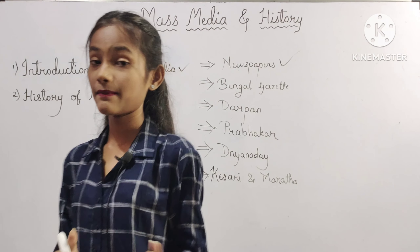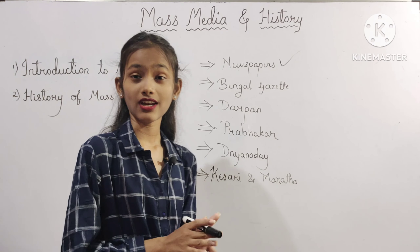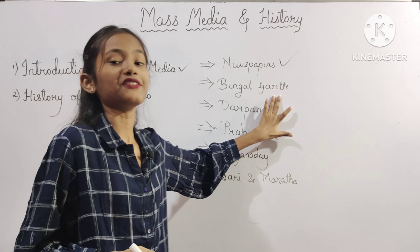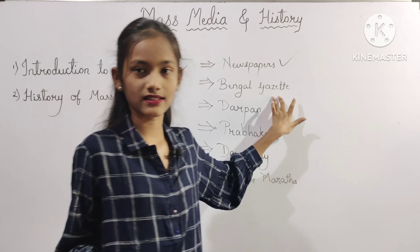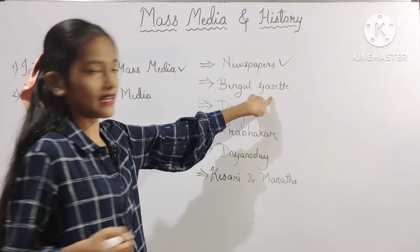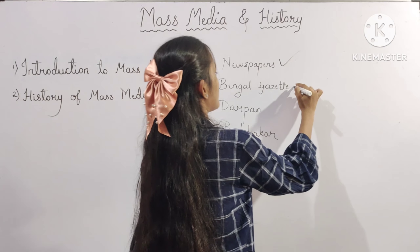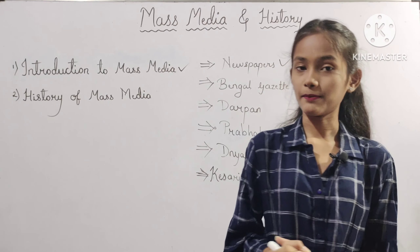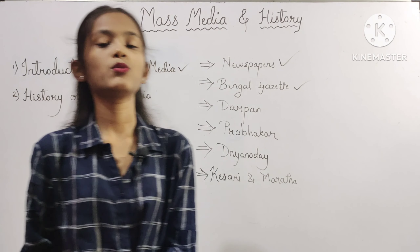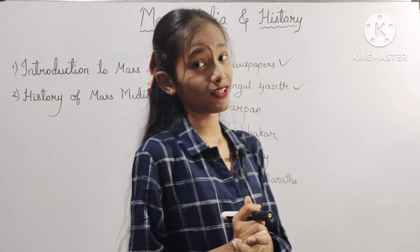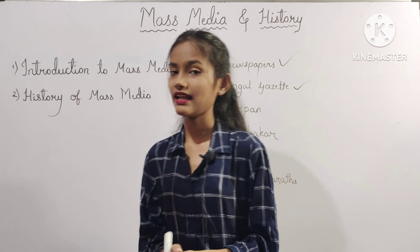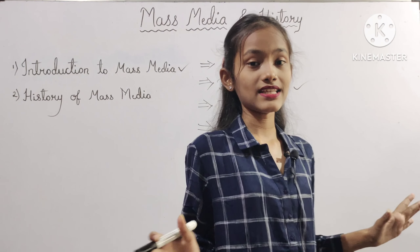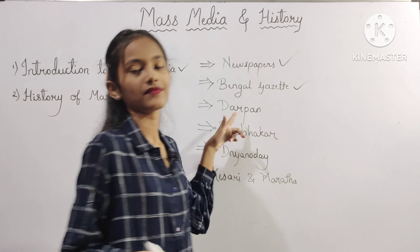The next newspaper is Darpan. The newspaper Darpan was started in 1832 in Mumbai. Bal Shastri Jambhekar was the editor of Darpan. Darpan samachar patra ki shuruaat Mumbai mein 1832 mein hui thi aur Bal Shastri Jambhekar Darpan ke sampadak the.